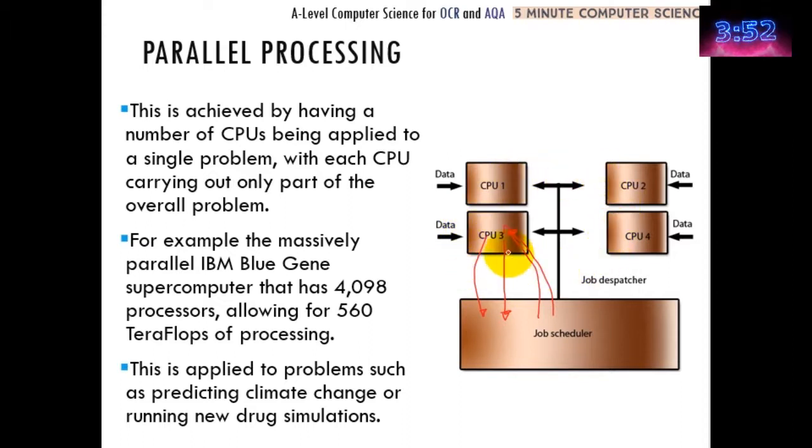This means you can get very large processing done very quickly. Take for example the IBM Blue Gene - that's 4,098 processors all working together, allowing for 560 teraflops of processing. That's huge, and the kind of thing you might want to use for 3D rendering or artificial intelligence.